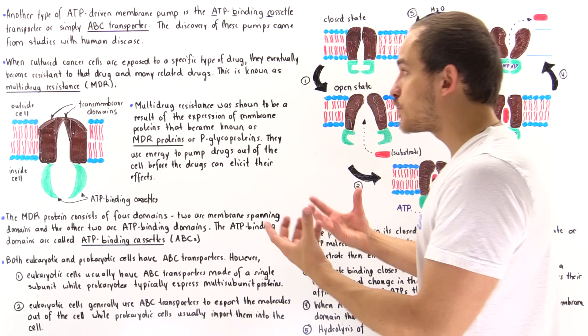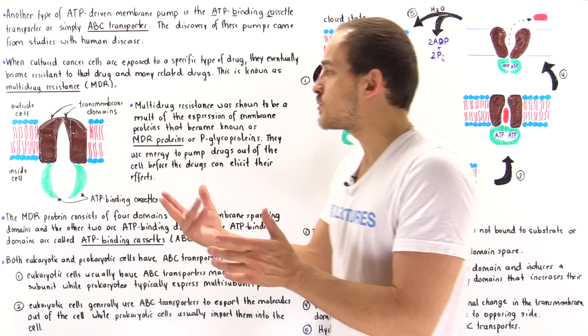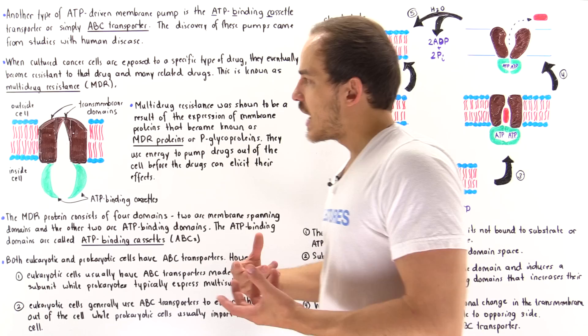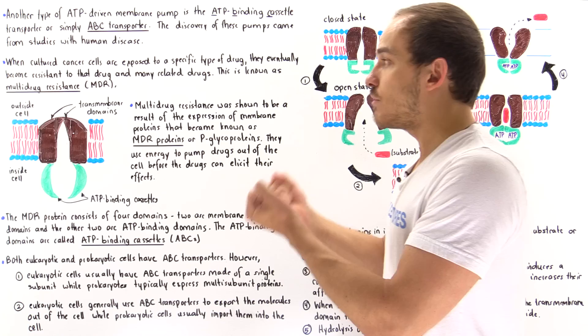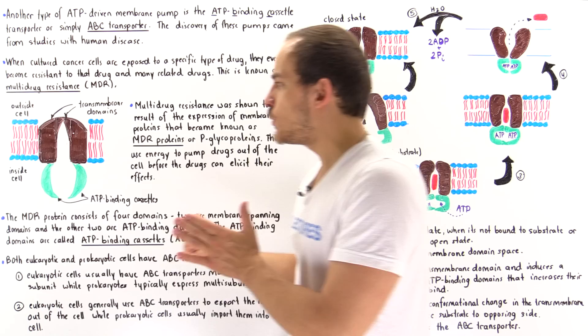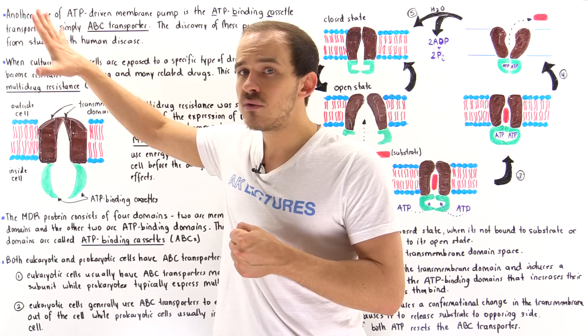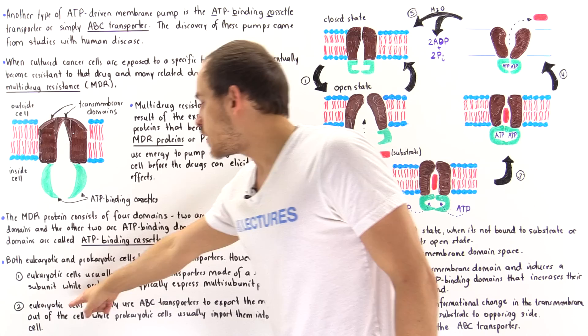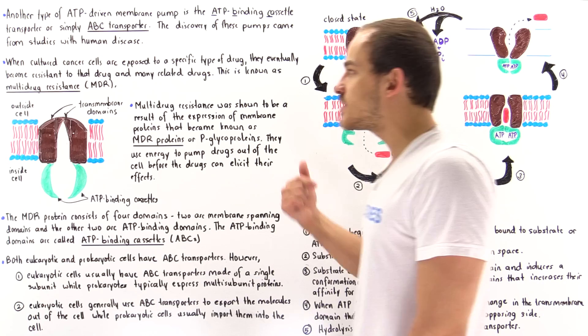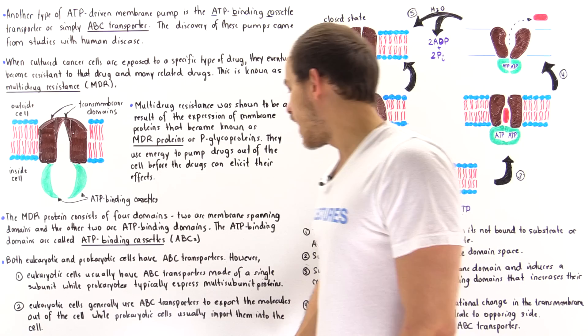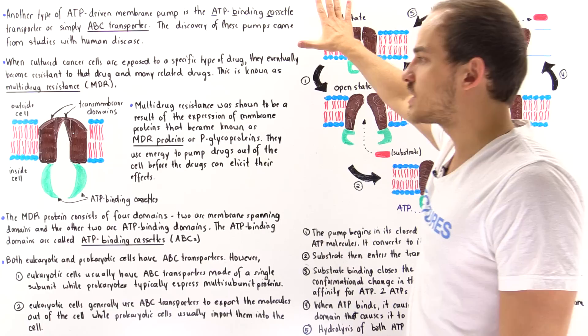Prokaryotic cells typically express ABC transporters that contain many subunits — sometimes dimers, sometimes tetramers, and so forth. The second major difference is directionality: the MDR protein found in humans moves the substrate molecule from the inside to the outside of the cell, but in prokaryotic cells the ABC transporter typically moves the substrate from the outside to the inside. Eukaryotic cells generally export molecules, while prokaryotic cells import them.